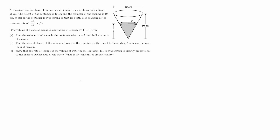In this next problem we have a container in the shape of an open right circular cone. The height of the container is 10 centimeters, the diameter of the opening is also 10 centimeters, meaning the radius of the opening is 5 centimeters. Water in the container is evaporating so that its depth h is changing at a constant rate of negative 3/10 centimeters per hour, so dh/dt = −3/10 cm/hr.